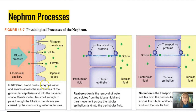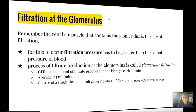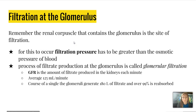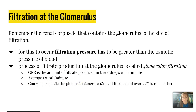The nephron process of filtration, reabsorption, and secretion will be explored further in class. At the glomerulus, the renal corpuscle is the site of filtration. For this to occur, filtration pressure must be greater than the osmotic pressure of blood. The process of filtrate production is called the glomerular filtration rate, or GFR — the amount of filtrate produced each minute, about 125 milliliters per minute. In a single day, the glomeruli generate about 180 liters of filtrate, of which over 99% is reabsorbed.